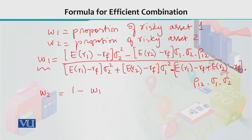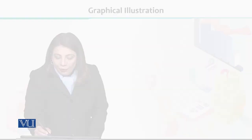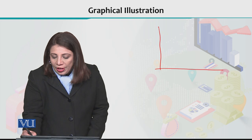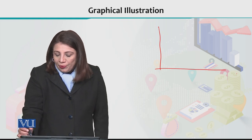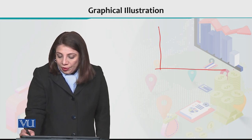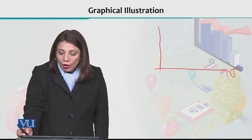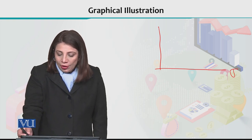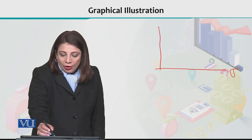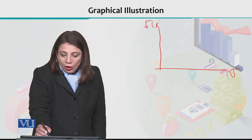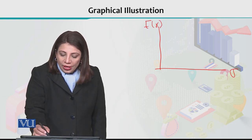Using the W1 and W2 formulas, you can identify the same tangency point we discussed. If we want to see it graphically, we take risk on the x-axis and return on the vertical axis.